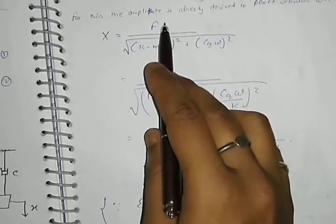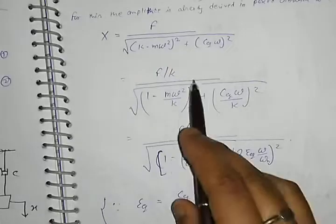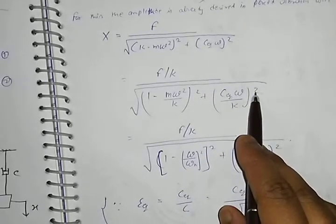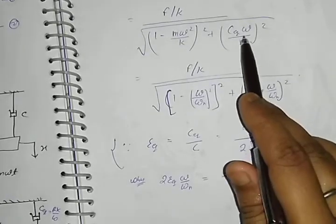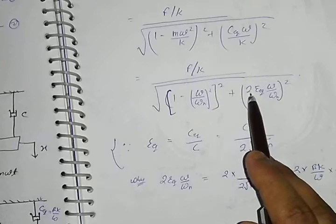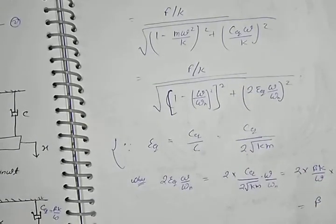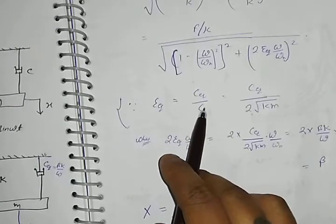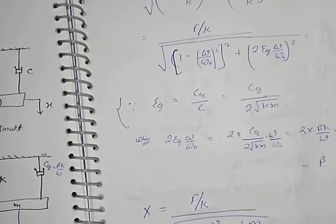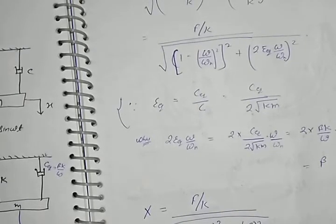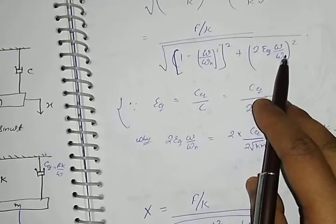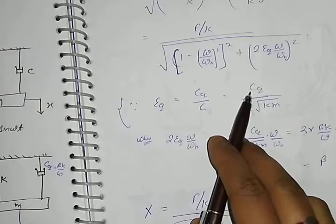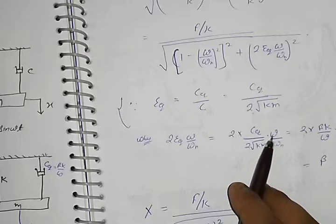Dividing numerator and denominator by k, we get x = (F/k) / √[(1 − mω²/k)² + (c_equivalent·ω/k)²]. We know that c_equivalent·ω/k becomes 2η_equivalent·ω/ωₙ, where η_equivalent = c_equivalent / (2√(km)), and the critical damping c = 2√(km).